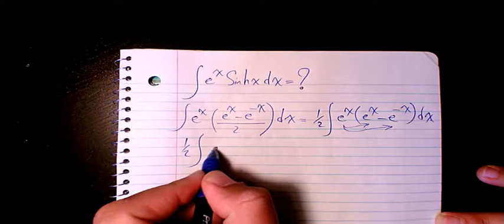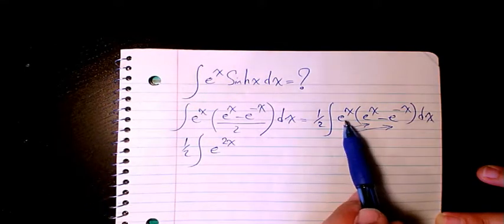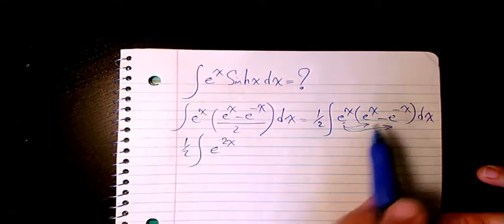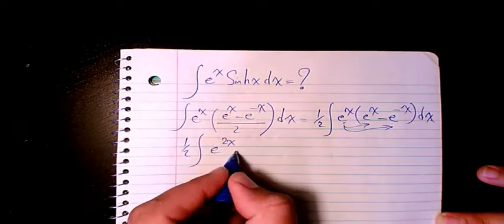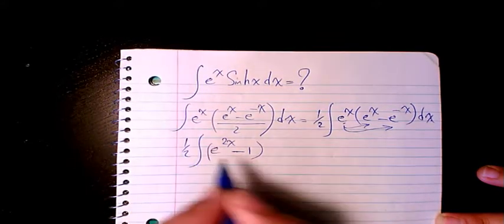is going to be e to the power of 2x. Then e to the power of x times e to the power of negative x, that makes it 1, so we have negative 1 because of the negative in here.